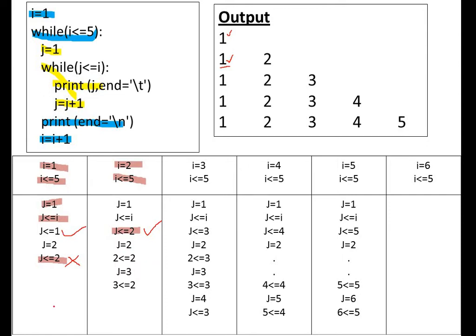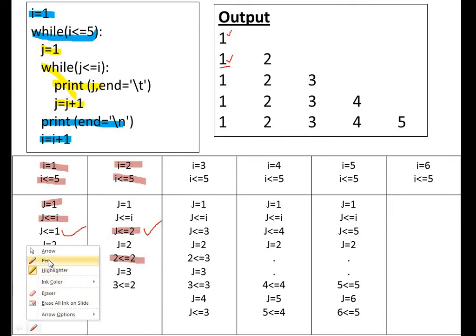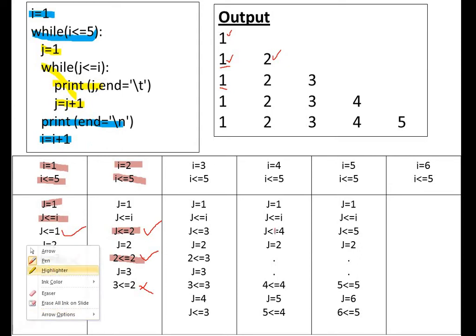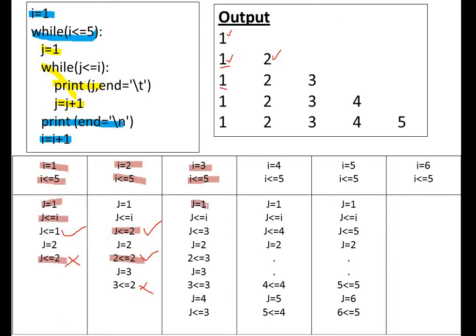Next, j equal to j plus one so j becomes two. Two less than or equal to two — not less but equal, so condition is true and two is printed. Then j becomes three, three less than or equal to two is false, so the cursor goes to end slash n, printing a newline. Then i equal to i plus one, i becomes three. i less than or equal to five is true, so the inner loop starts again.